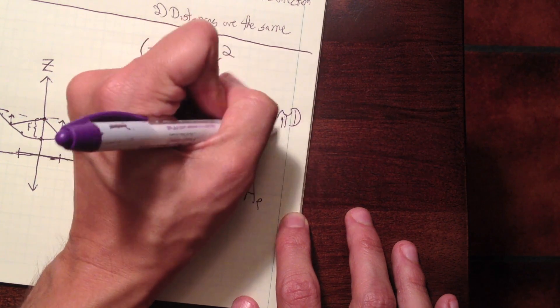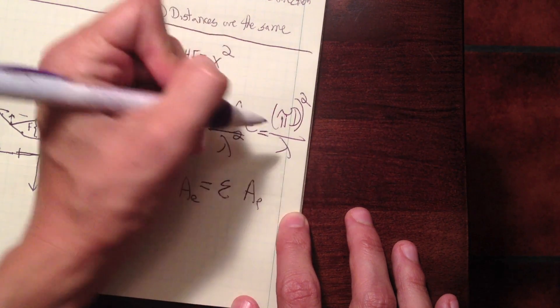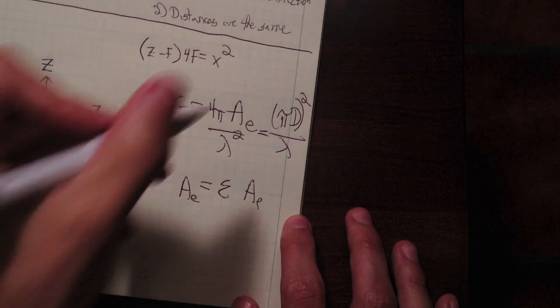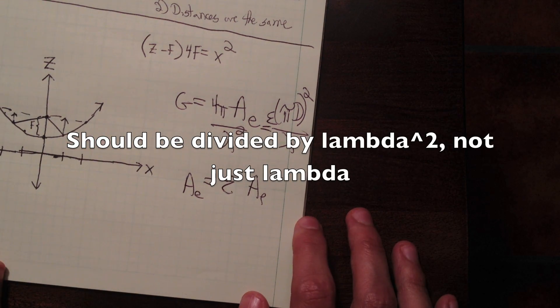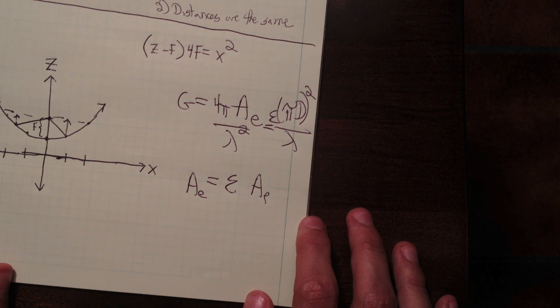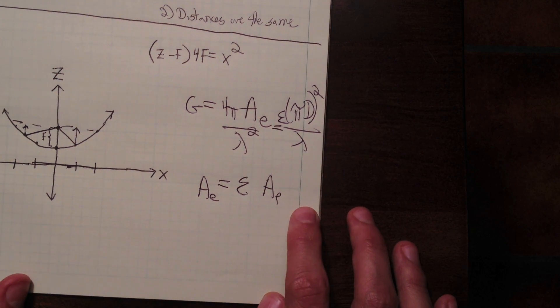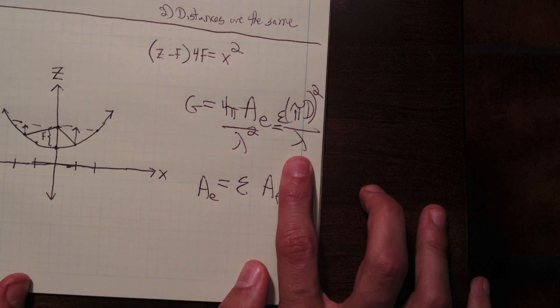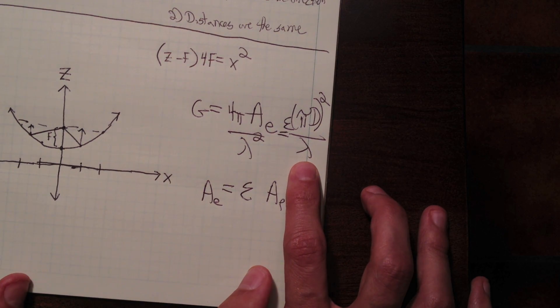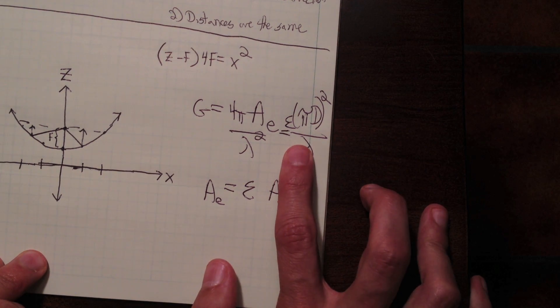So we can rewrite this, pi d squared over lambda times the efficiency. So if we know the size of our reflector antenna and we know the frequency, then we can kind of estimate the gain for a well designed reflector antenna.